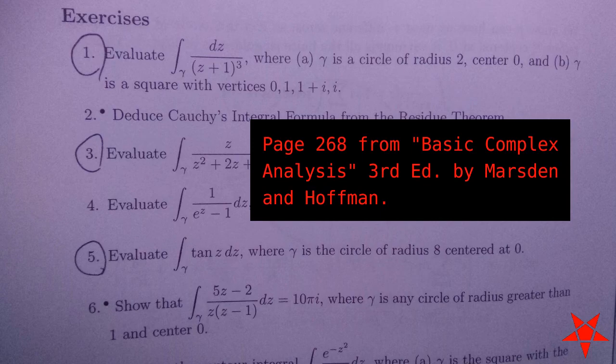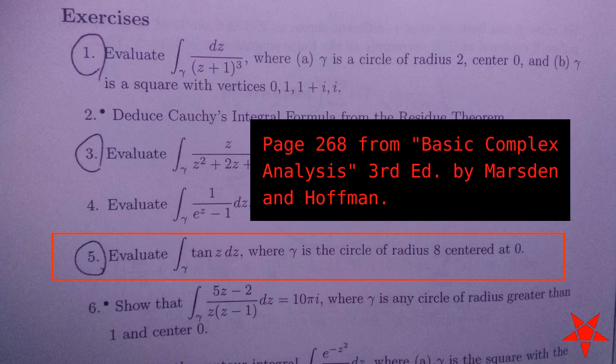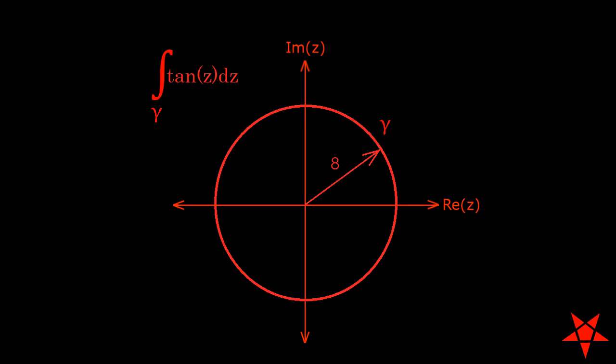Welcome back to Pentagram Prime everyone. Today we will be looking at Exercise 5 on page 268 of Marsden and Hoffman, where we are asked to integrate the tangent of z along a closed path in the complex plane.